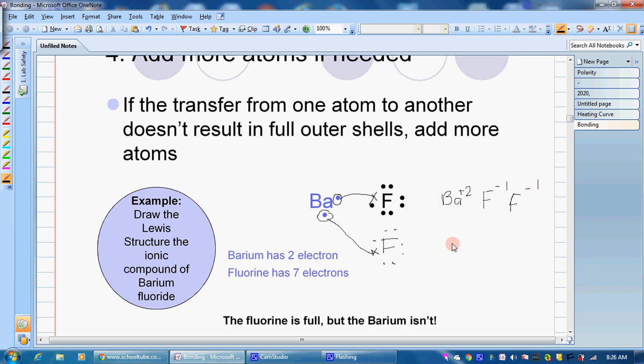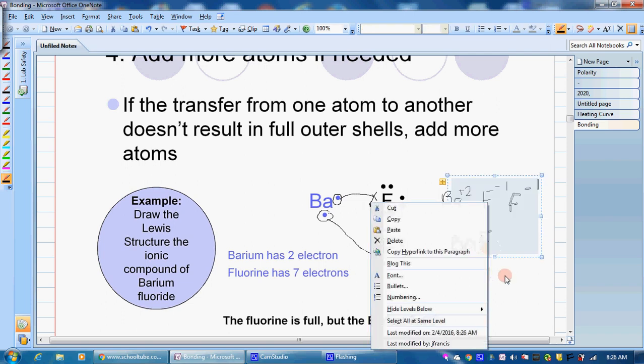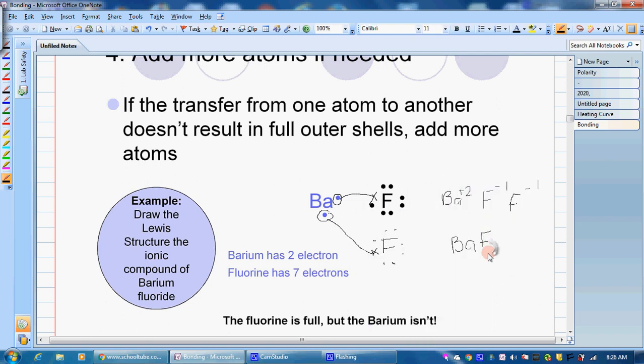So now when we write our formula, we have 1 barium but we have 2 fluorines. So we write our fluorine, and then we put a small number subscript 2 right there at the bottom. That number 2 then allows us to show that there's 2 fluorines. We need both of those charges to cancel out that positive.